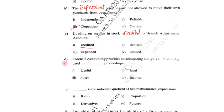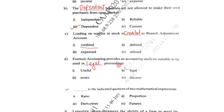Next, question D: Forensic accounting provides an accounting analysis suitable to be used in dash proceedings. Options are legal, notes, or income. The correct answer is legal — forensic accounting provides an accounting analysis suitable to be used in legal proceedings.